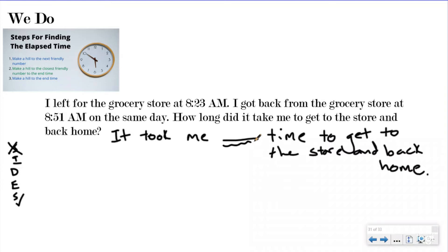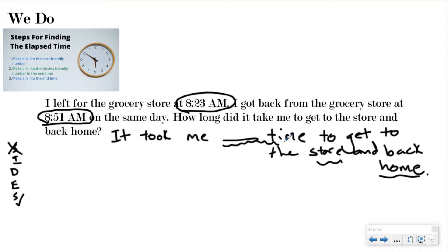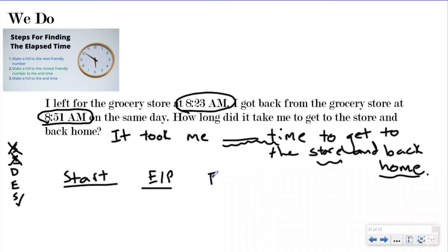We don't do CUBES here — you shouldn't be circling keywords before you underline the question; you need to know the question first, beginning with the end in mind. I'm looking for anything about time and anything about the store and back home. I left for the grocery store at 8:23 AM — I'm identifying that not just because it's a number but because it is a time, which is what my statement is asking about. I got back from the grocery store at 8:51 — again important because it's a time. They're giving me a start time and end time, asking for how much time I spent — this is an elapsed time problem.